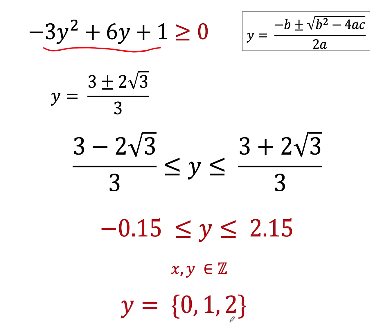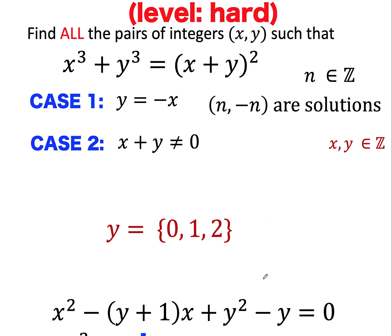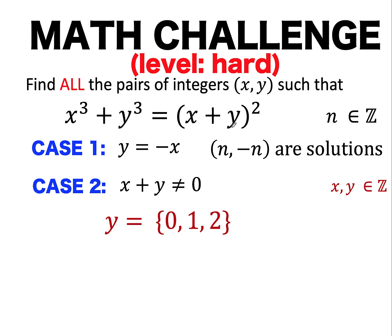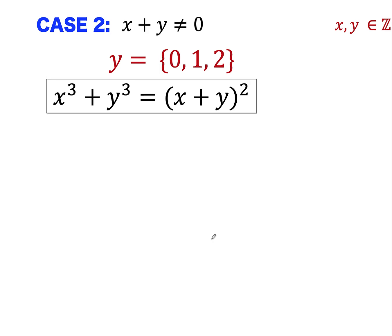So these are the three possible integer values of y that satisfy the discriminant condition. Going back to our main problem — finding integer solutions of x cubed plus y cubed equals the quantity x plus y squared — we now have the values for y in the second case. We just need to find what values of x can be paired with each of these y values.